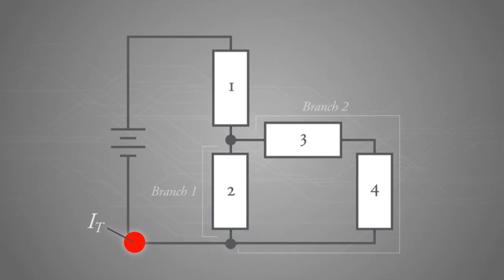As IB1 and IB2 enter node two, the two currents add, and the sum of the currents exit node two, which is the circuit's total current, IT.